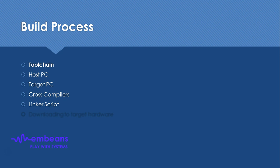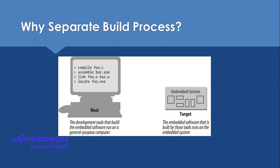The result of the final step is a file called an executable binary image that is ready to run on the embedded system. After generating this binary file, we need to download it to the target hardware to make it run. We need a separate build process because the host PC — which may run Windows with an Intel or PowerPC architecture — is different from the embedded system, which may have a very simple 8-bit microcontroller architecture. The host system cannot directly run programs built for the target architecture.